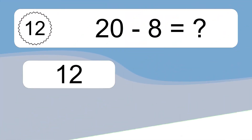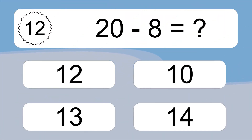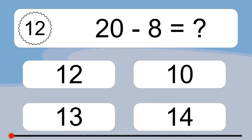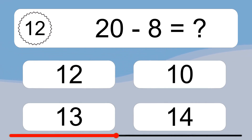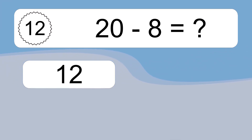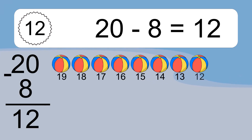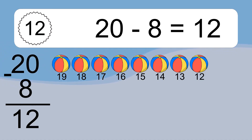20 minus 8 equals what? 20 minus 8 equals 12. Let's count it: 19, 18, 17, 16, 15, 14, 13, 12.